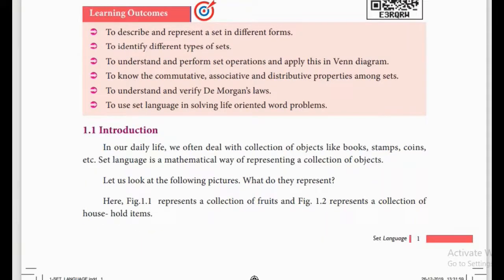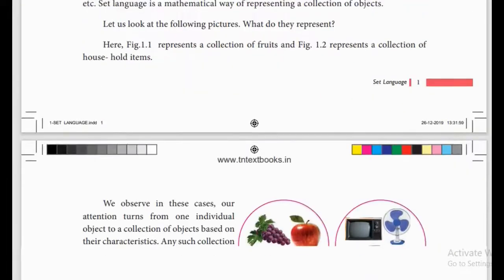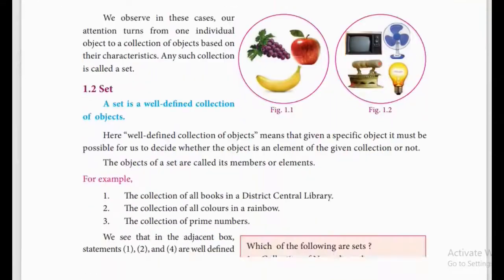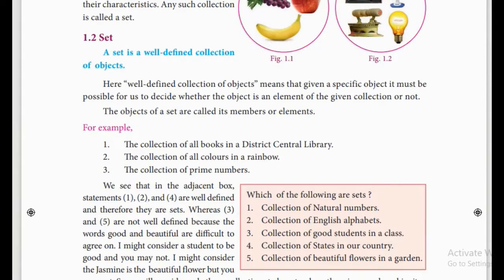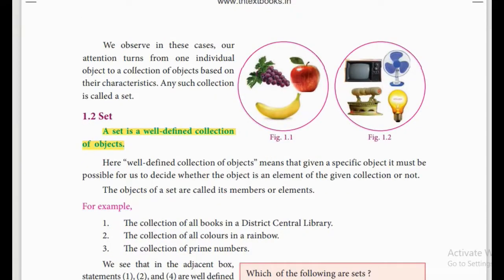So what is meant by a set? I hope you already learned this in your online class. Set definition is given here. A set is a well-defined collection of objects. What is the meaning of well-defined? Look at the examples given here. The first picture contains only fruits. So we can say it is a set of fruits. We can't include vegetables here, because if it is a set it should be well-defined.